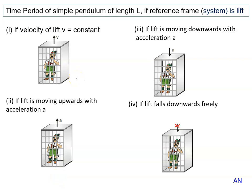Time period of a simple pendulum of length L, if reference frame is a lift. First condition: if velocity of the lift v is constant, then acceleration is 0. If acceleration is 0, then g will remain only g.